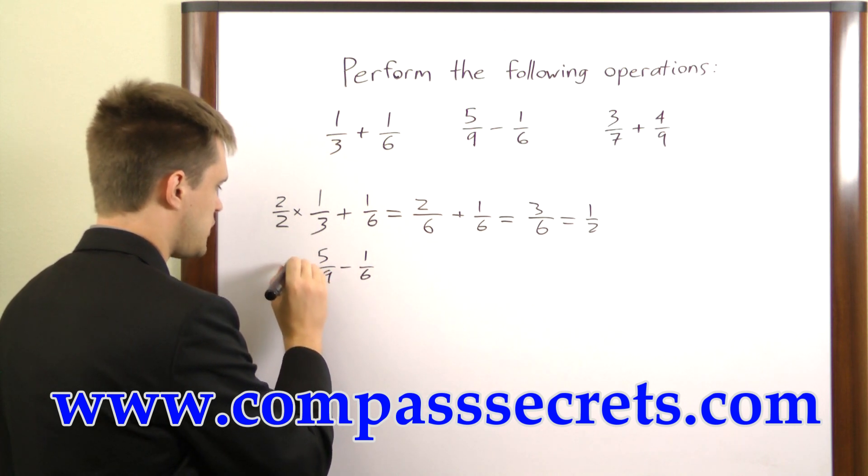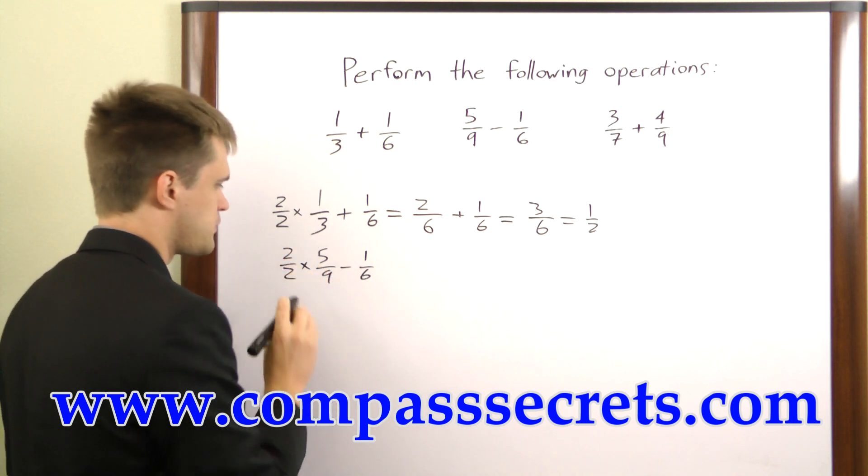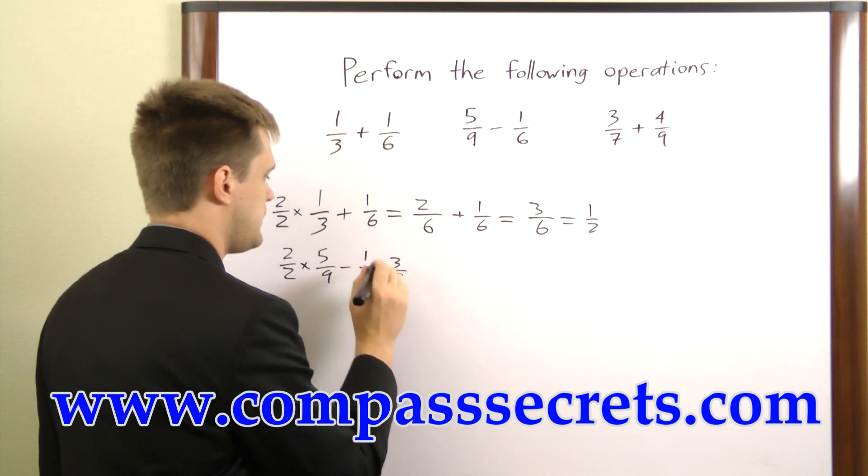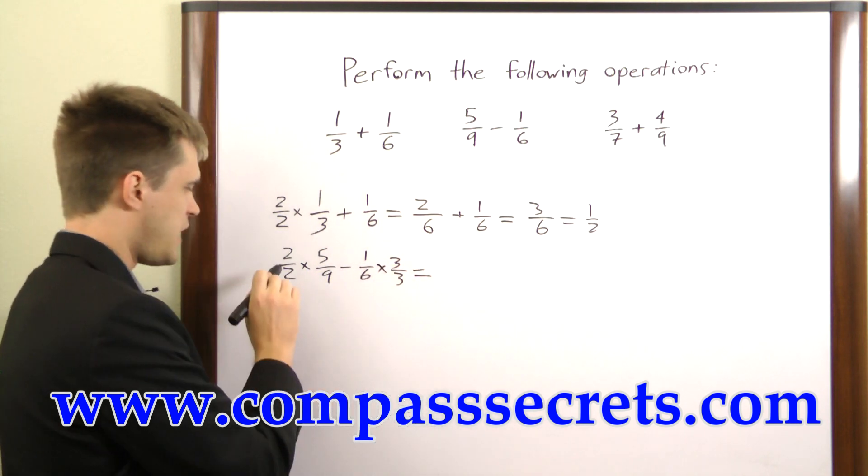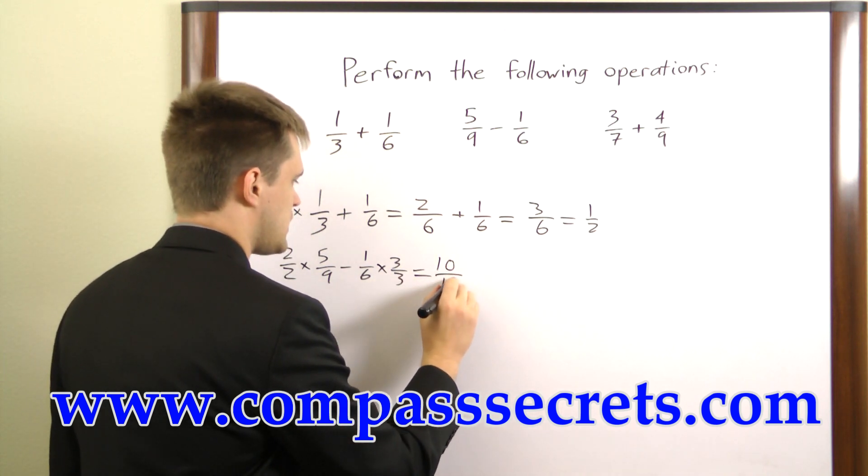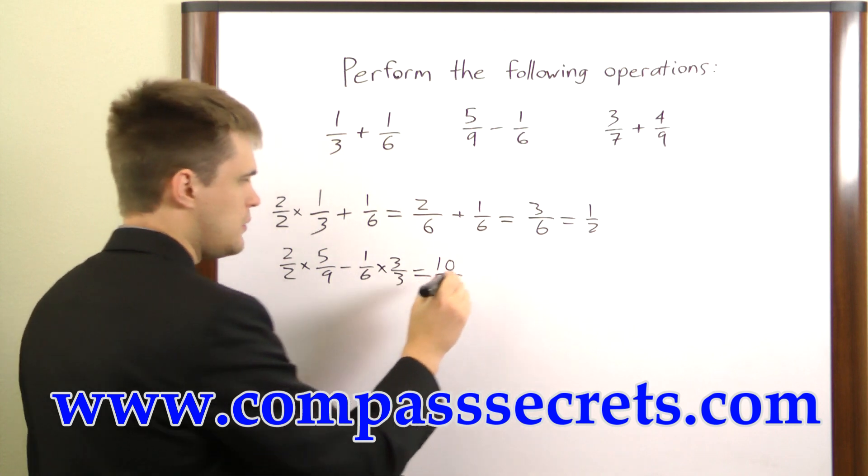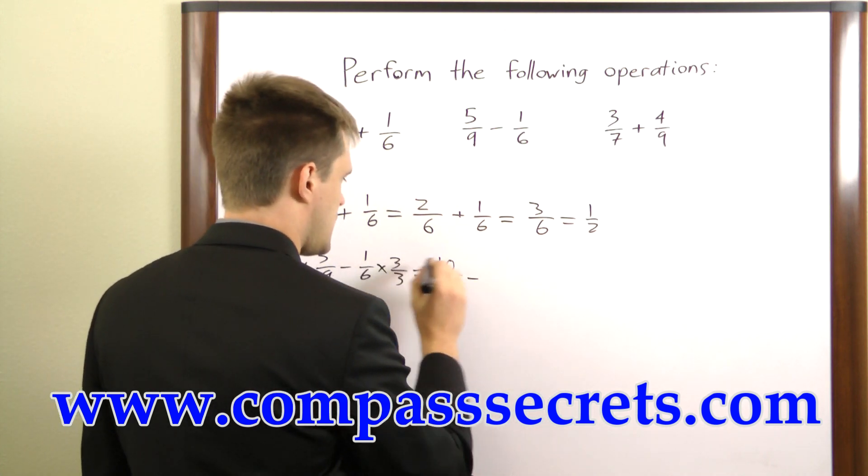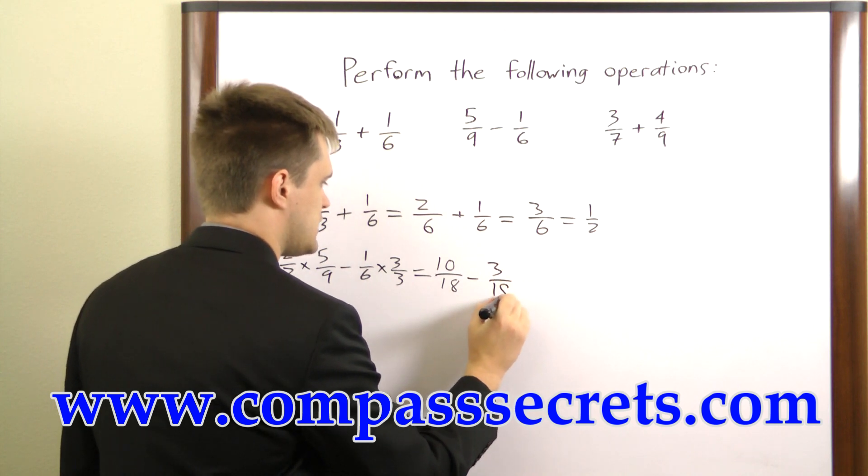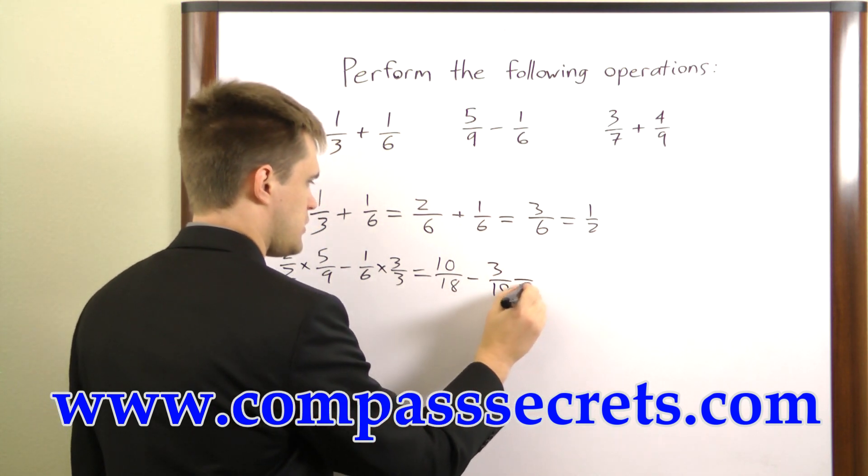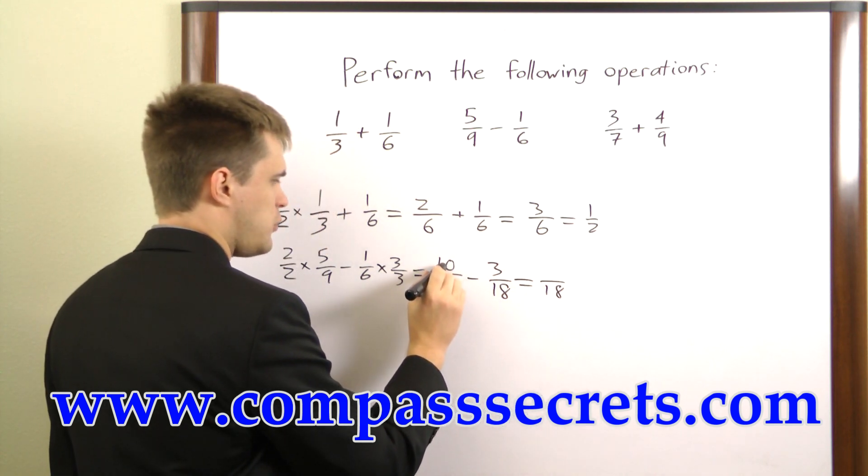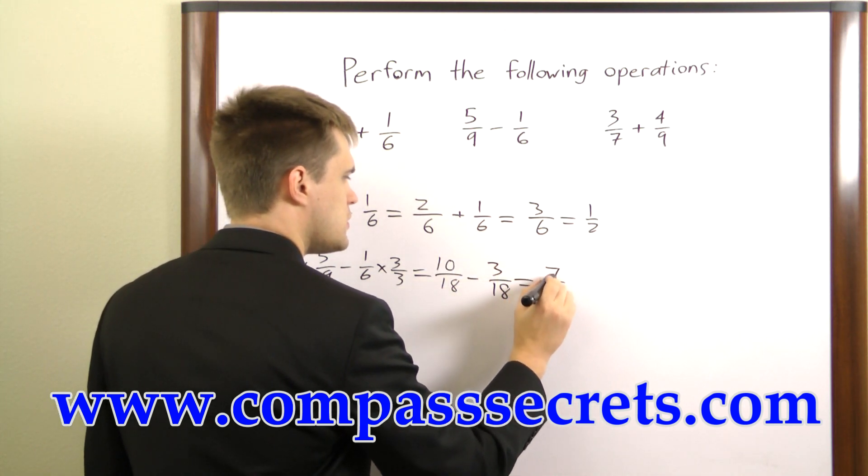The first fraction will multiply by 2 over 2. The second fraction will multiply by 3 over 3. So now what we have is 2 times 5 is 10, over 2 times 9 is 18, minus 1 times 3 is 3, 6 times 3 is 18. So our solution here, we're going to retain the 18 on the bottom, and on the top we'll have 10 minus 3, which is 7.